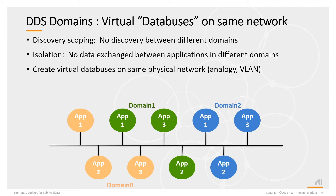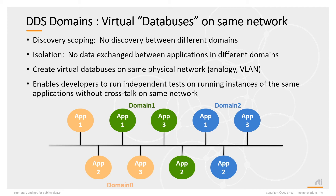This is like creating virtual data buses on the same physical network. It allows different developers to work on their own parts of the system and run tests while sharing the same network without their tests interfering with each other. For example, at RTI, every developer is assigned a different domain ID, so when running tests, you run on a domain ID that no one else is using. Shared domain IDs are used when doing combined or system-level tests where the entire system is being tested together.